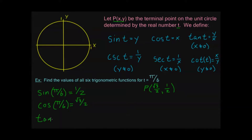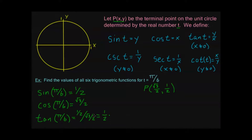Now tangent of pi over 6 equals y over x. We first check that x is not equal to 0 — it's not, so we're okay. Tangent of pi over 6 is 1 half divided by square root of 3 over 2. Dividing by a fraction is the same as multiplying by its reciprocal, so that's 1 half times 2 over square root of 3. The 2s cancel, giving 1 over square root of 3, or rationalizing the denominator, square root of 3 over 3.